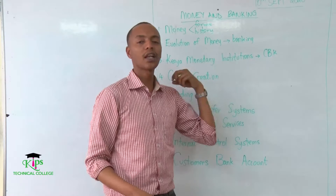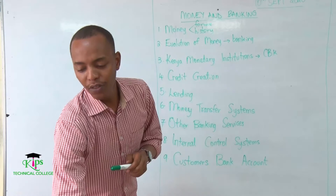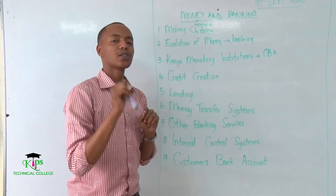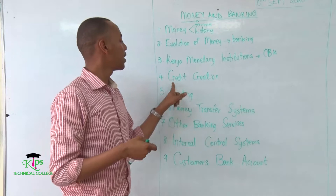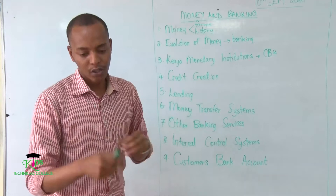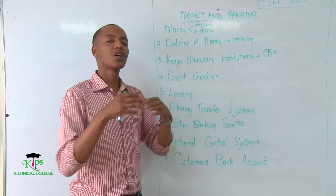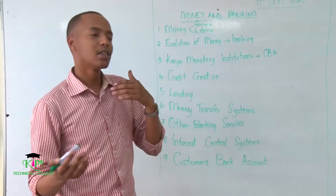All of these are part of the Kenyan monetary institutions. Then we'll talk about credit creation — the process of creating credit. This question is frequently asked in NEC exams, where you may be asked for 10 or 15 marks to explain how money is created. Money is created through a process called credit creation, and we'll also cover the limitations that prevent excessive money creation in society.